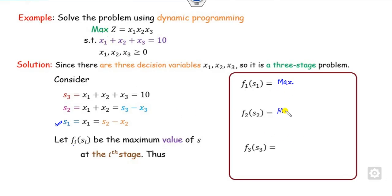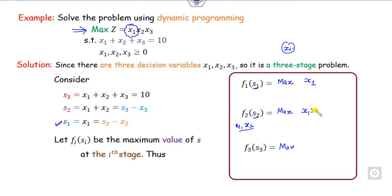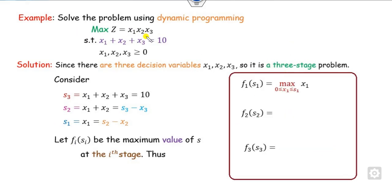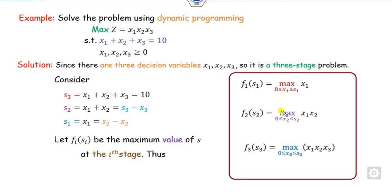Since the problem is maximization, I can write each sub-problem as a maximization. Here x1 is the variable consisting of only x1, while x2 is the variable consisting of x1 and x2 both. Looking at the objective function, x1 corresponds to x1 only; x1, x2 correspond to x1 and x2; and x1, x2, x3 are all present in the third stage. So we write maximization with x1 ranging from 0 to its domain, and similarly for x2 from 0 to s2.